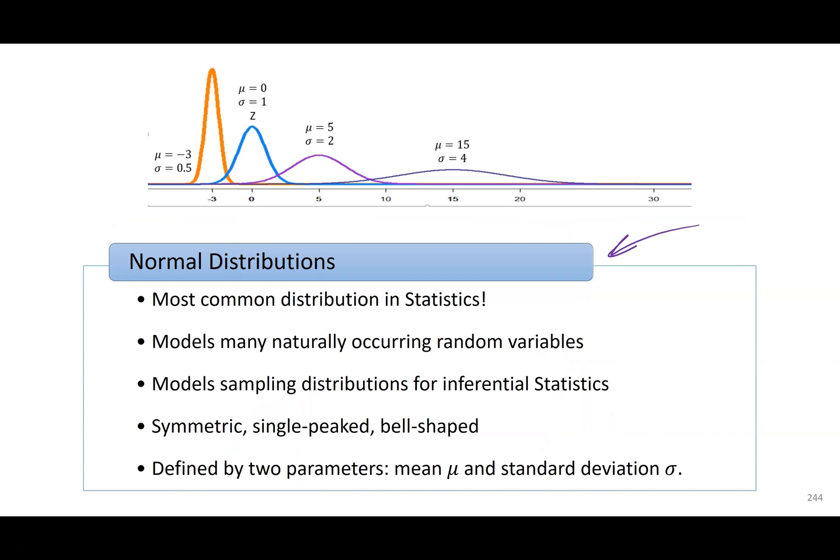So normal distributions, they're probably one of the most, if not the most, popular distribution that we use in statistics. It's definitely something that you will see a lot. And one of the things that's great about it is, there are a lot of things that when you sample, they are approximately normally distributed. A lot more than you would think. We are going to end up using it a lot for sampling distributions. So that's going to come up next week.